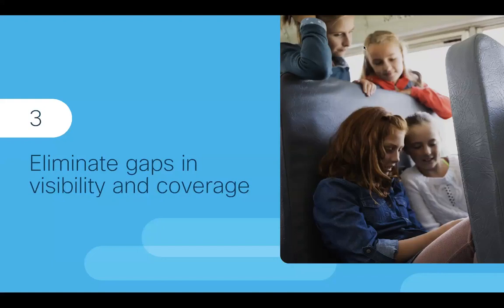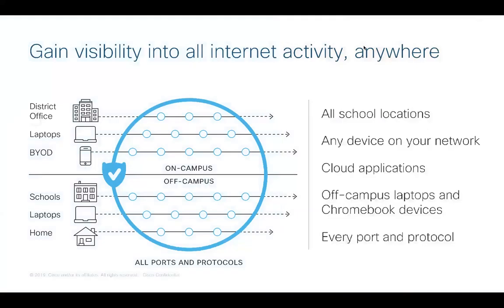The last item on our checklist is to eliminate gaps in visibility and coverage. Security needs have evolved along with the freedom to learn from many different locations and devices. By gaining visibility into all internet activities, whether on or off your campus, you can better protect against threats before they've actually reached your network. You can also ensure that roaming students and staff are secured anywhere they access the internet, and deliver reliable off-campus coverage across any internet-connected school device, such as laptops or Chromebooks.